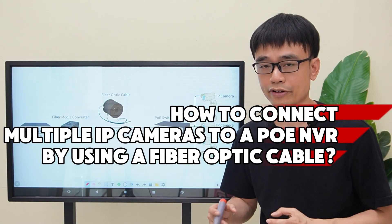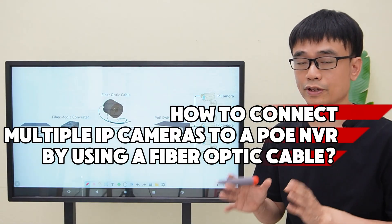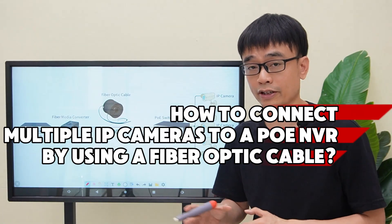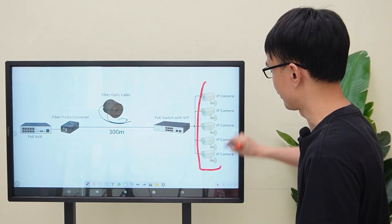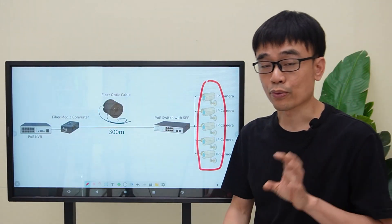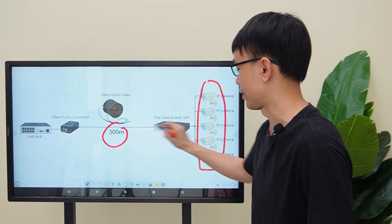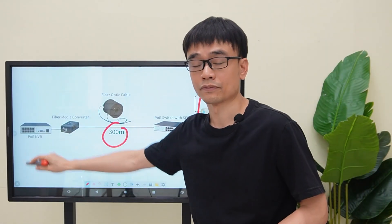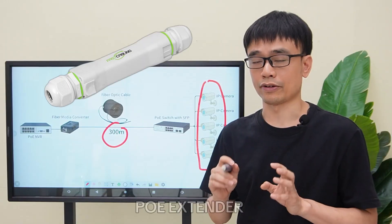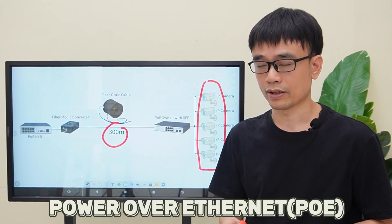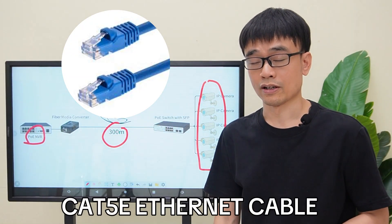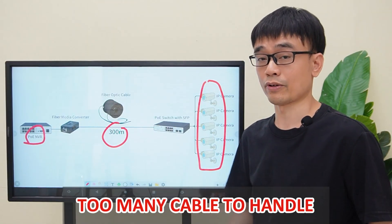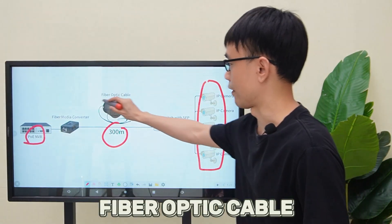How to connect multiple IP cameras to a PoE NVR using a fiber optic cable. The client has five IP cameras at the edge, about 300 meters from the PoE NVR. He knew he could use PoE standards to repeat the PoE and connect all the cameras back using Cat5e Ethernet cables, but there were too many cables, so he used fiber optic cable instead.